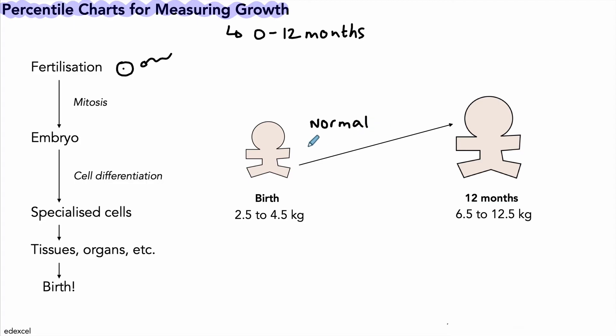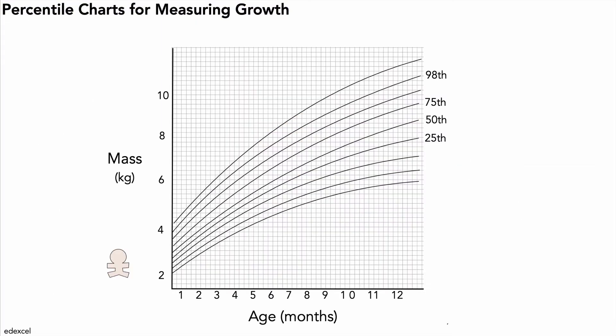But during that period from 0 to 12 months, how do we know if the baby is growing at a normal and healthy rate? This is where our percentile charts come in. Here's an example of a percentile chart, and this helps us to decide whether the growth rate of a baby is normal and healthy.